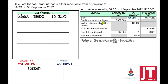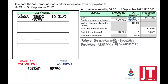For credit and cash purchases, they provided the amount excluding VAT, so to find the VAT amount we say times 15%. Credit and cash purchases means items purchased, so VAT input will be debited. If VAT input is debited, the VAT control account will be debited, and I am therefore going to minus that.